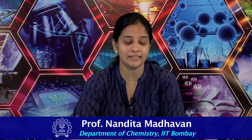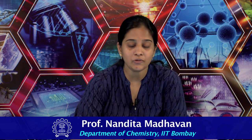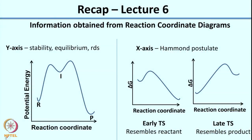Welcome to lecture 7 of reaction mechanisms. Just a recap of what we did in the last lecture. We were looking at the information that can be obtained from reaction coordinate diagrams. On the y-axis you have potential energy, and we looked at what information you get from that in the last class.